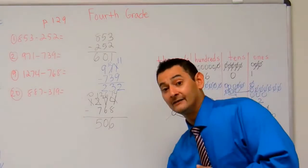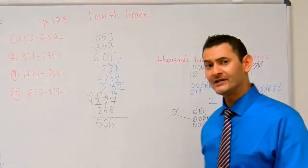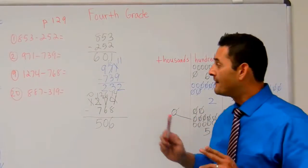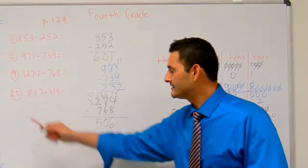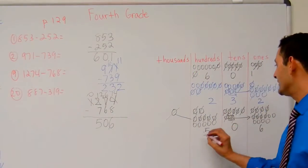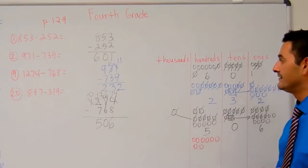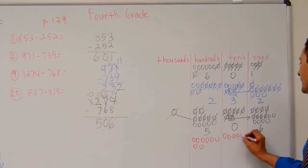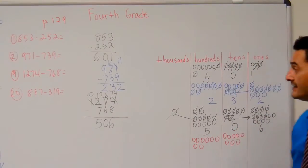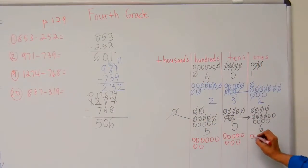And finally, let's work on this last one, number twenty. It says 887 minus 319. Let's fill this in — I have eight hundreds, one through eight. I've got eight tens, one through eight. And I have seven ones, one through seven.